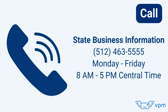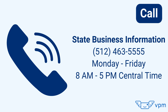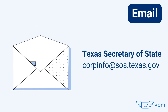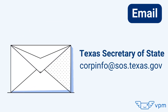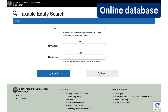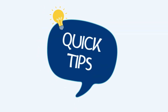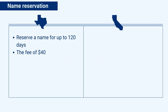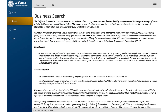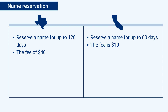Name availability search: here are ways to check if your name is available in Texas. You can call State Business Information at 512-463-5555, available Monday through Friday 8 a.m. to 5 p.m. Central Time. You can email the Secretary of State at corpinfo@sos.texas.gov. You can also run an online search via the Texas Comptroller's taxable entity search (free) or through SOS Direct ($1 per search). A tip: even if the name appears available online, call to confirm — most LLC filings are rejected due to business name issues. In Texas, you can reserve a name for 120 days for $40. In California, you can perform a business search through the California Secretary of State and reserve a name for up to 60 days for $10.